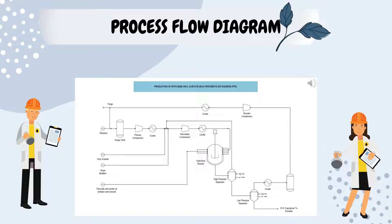After the reaction is done, the reactor outlet is sent to a high-pressure separator, where unreacted gases are separated. Ethylene gas separated from the high-pressure separator is recycled back to the suction of the secondary compressor. The product and remaining unreacted gases are sent to the low-pressure separator. Unreacted gases from the low-pressure separator are sent to the purge stream and mixed with fresh ethylene at the suction of the primary compressor. The EVA product is collected from the outlet of the low-pressure separator.